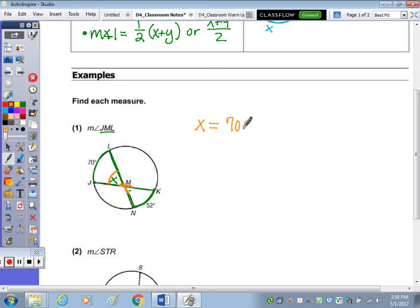So 70 plus 52 divided by 2. So that's 122 divided by 2, we get 21. So the measure of angle JML is 21 degrees.